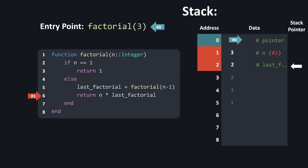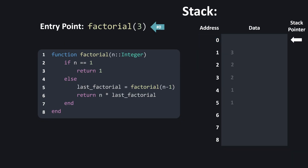Once the function has calculated its return value, it no longer needs the local variables n equals 3 and last_factorial equals 2, so we free this memory by moving the stack pointer up to the last function call. We pop the instruction pointer to know where to continue execution after evaluating factorial(3), and finally pop the final instruction pointer. We put the result of the function on the stack for later use. At all stages we didn't have to overwrite any memory — allocation was simply moving the stack pointer up and down and copying values.